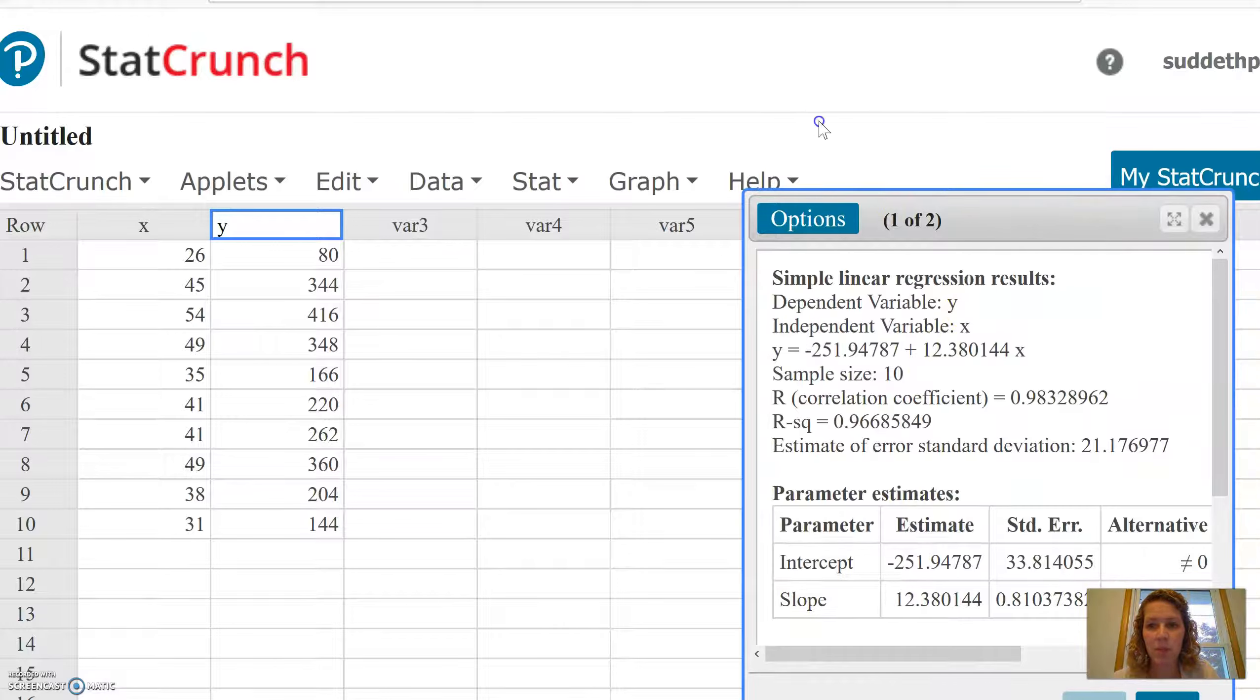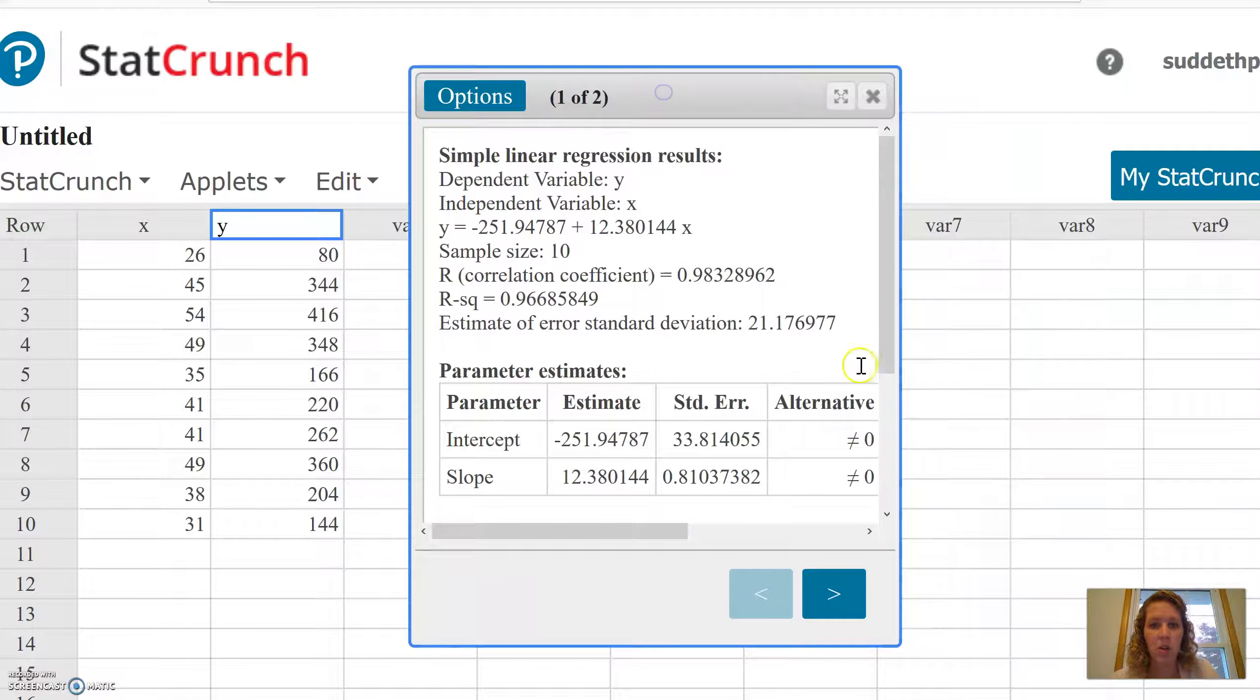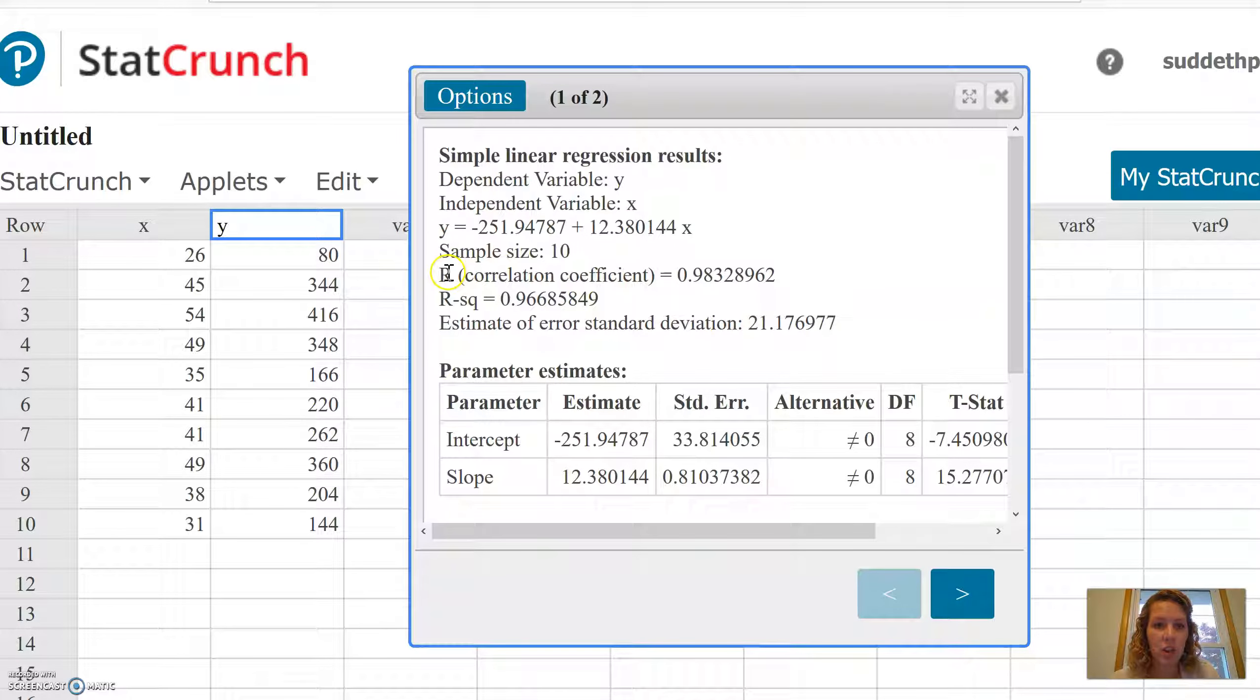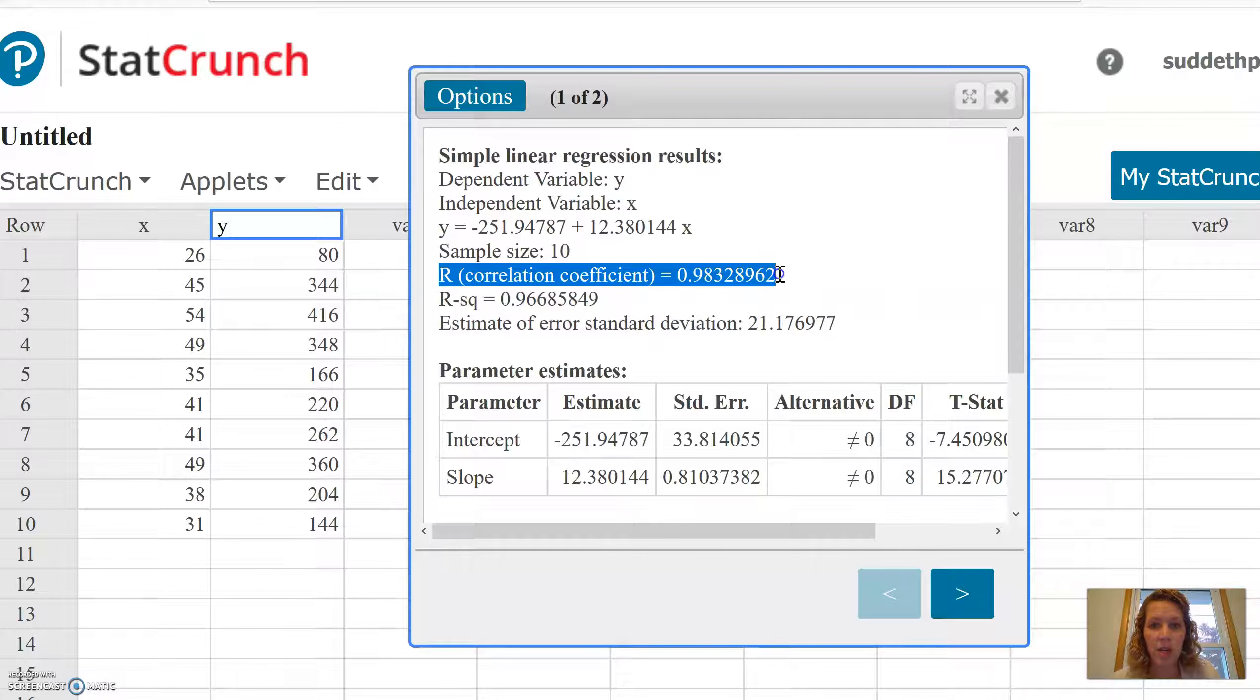Now, according to this, our correlation coefficient r is going to be 0.98. So I'm going to write that down on my paper, 0.98328962. Now, back to our problem.